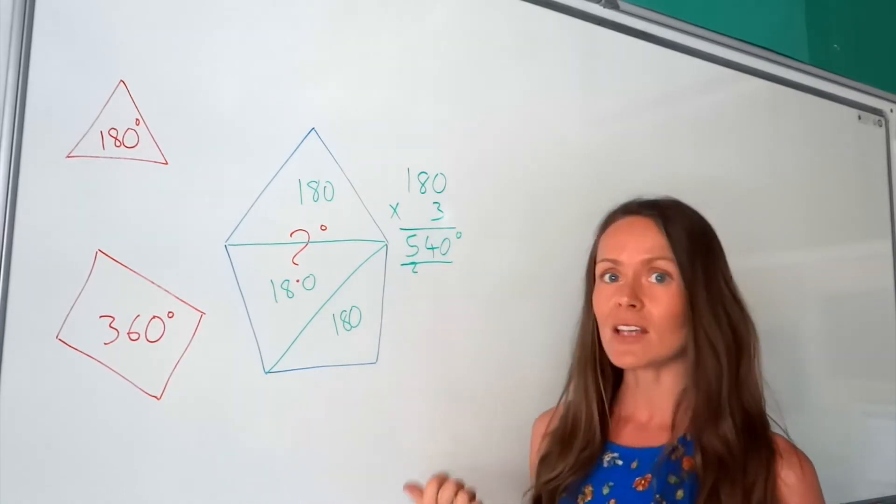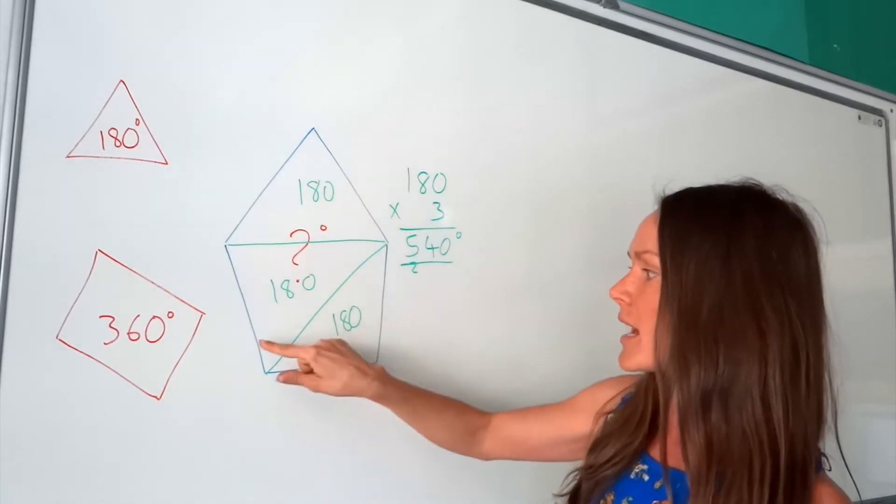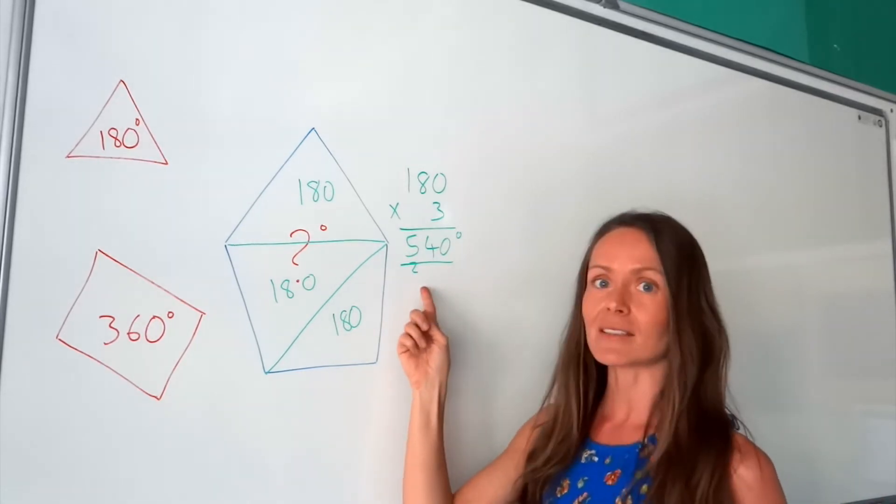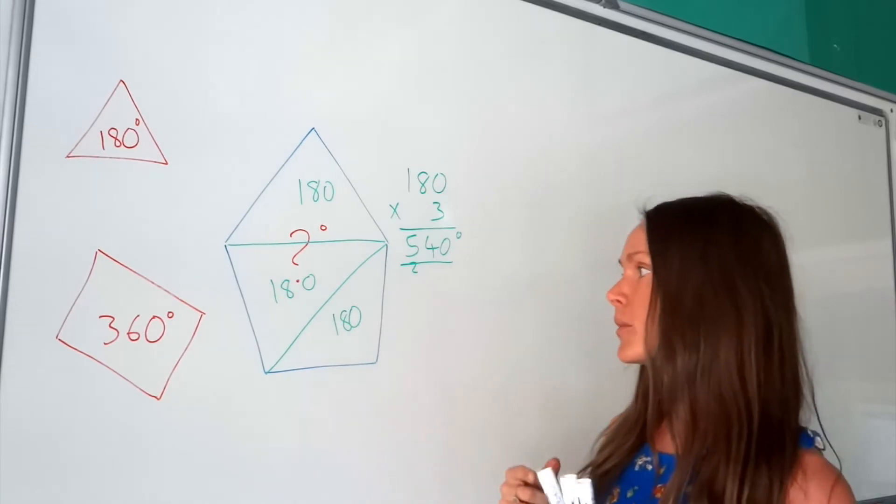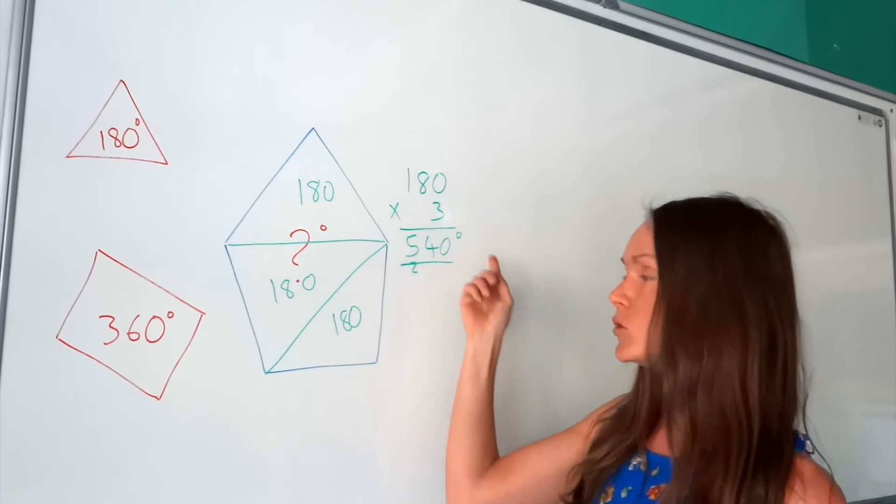So this is the sum of interior angles. So that just means all of these inside angles added together. So all pentagons have exactly the same, so they'll always have angles adding up to 540.